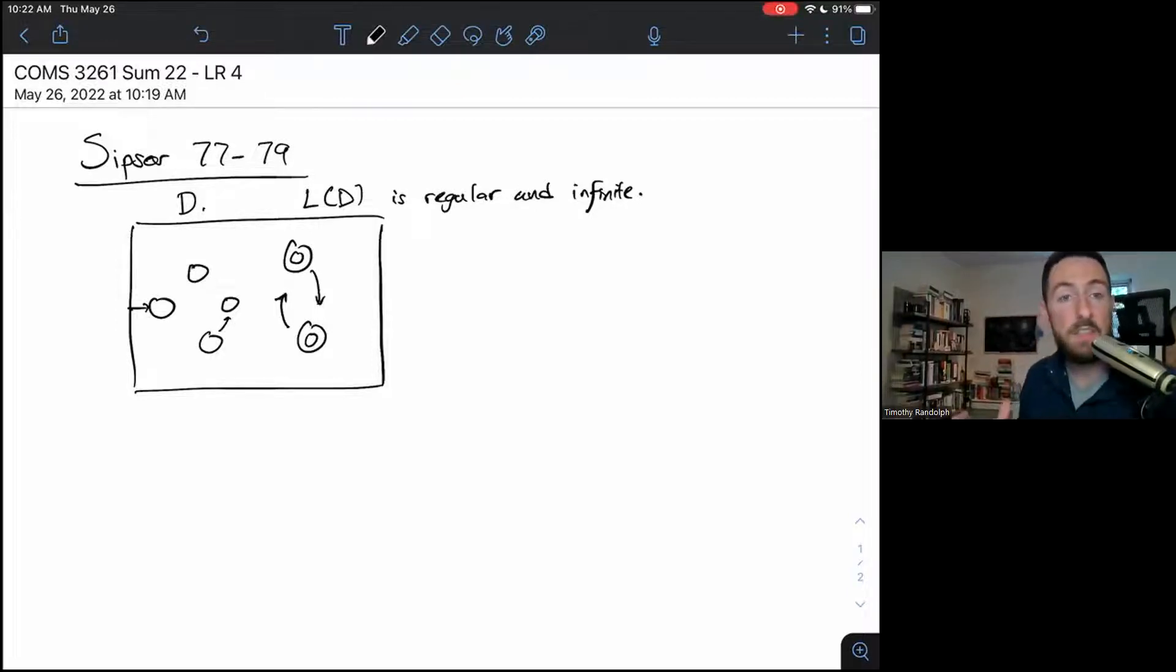And I specify that the language D recognizes is regular and infinite, which means there's also, I can pick a string that's as long as I want, because if all the strings are shorter than some value, well, it can't possibly be infinite.